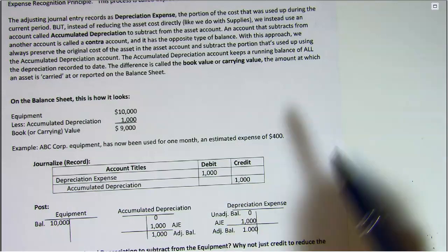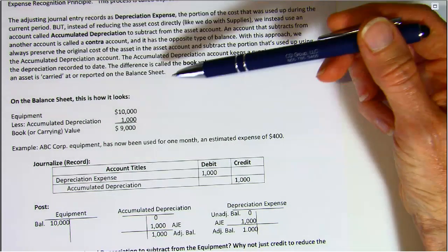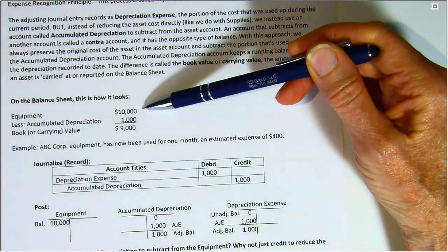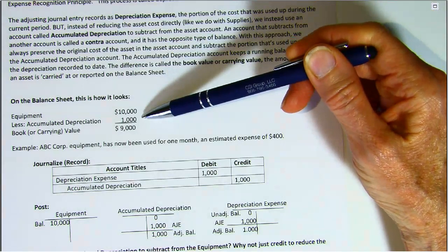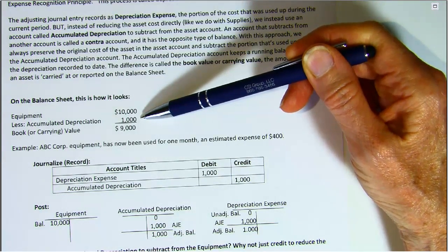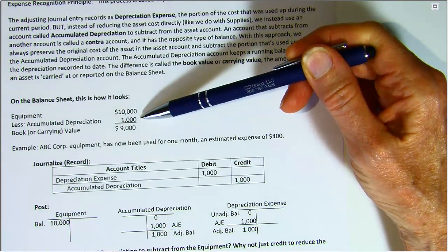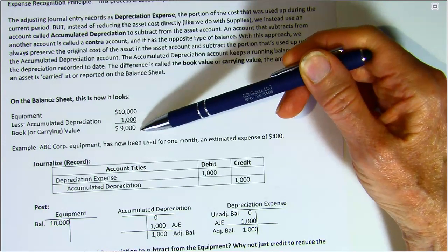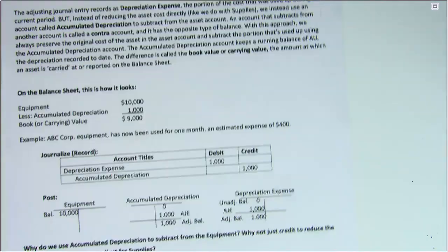And then on the balance sheet, we show the original cost less how much has been worn out or used up so far — that's our accumulated depreciation — and the difference is called our book or carrying value.